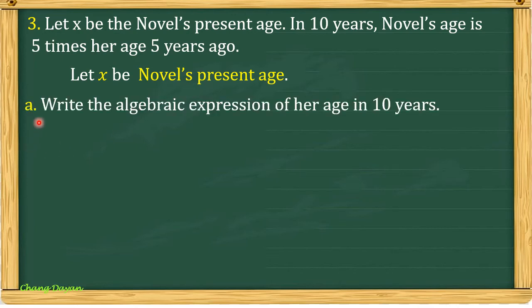For letter A, write the algebraic expression of her age in 10 years. Since we have here x, we will just add 10. So our answer here is x plus 10. X represents the present age of novel. In 10 years, meaning you have to add 10.